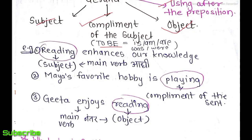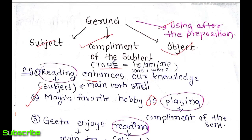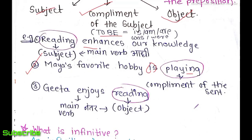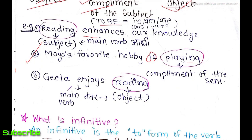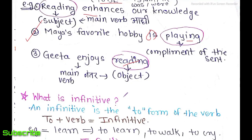One simple example: 'Reading enhances our knowledge.' The main verb is 'enhances,' and the -ing word 'reading' is the subject. Second example: 'Maya's favorite hobby is playing.' Here, 'playing' comes after the to-be form 'is,' so it is the complement of the sentence. Third example: 'Gita enjoys reading.' The main verb is 'enjoys,' and 'reading' is the object. This is all about the gerund.